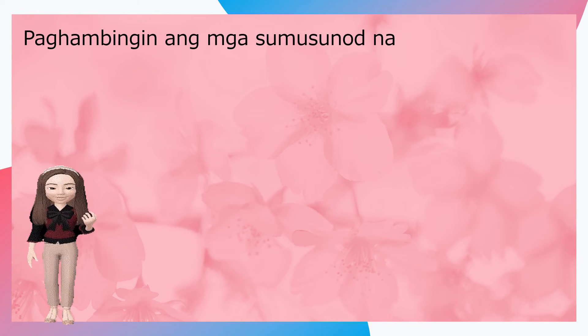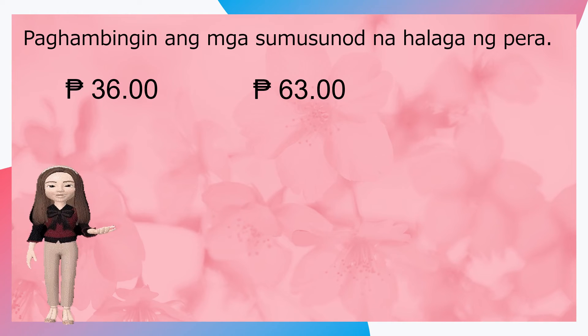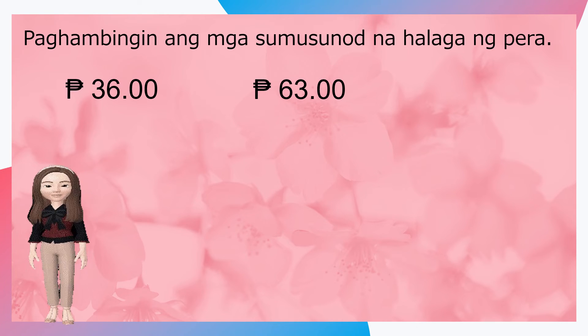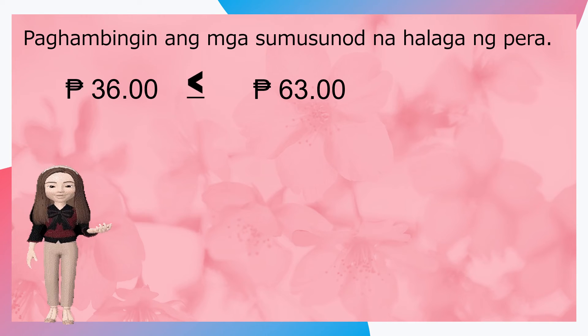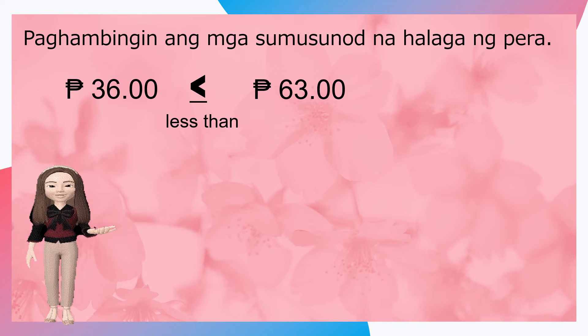Ngayon naman, sagutin mo ang inihanda kong pagsasanay para sa iyo. Paghambingin ang mga sumusunod na halaga ng pera. Unang bilang: tatlumput anim na piso at anim naput tatlong piso. Anong simbolo ang iyong ilalagay? Magaling, ito ay ang less than, dahil mas maliit ang tatlumput anim na piso kaysa sa anim naput tatlong piso.